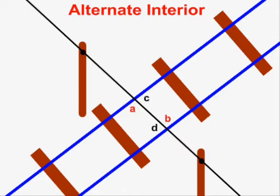Angles A and B in this diagram are alternate interior. They are alternate because they are found on opposite sides of the transversal, or opposite sides of the wire. And they are interior because they are both found in the interior of the train tracks — the interior of the pair of parallel lines.